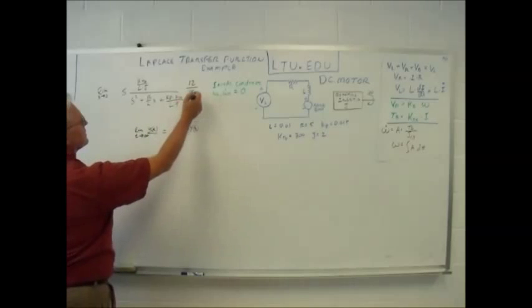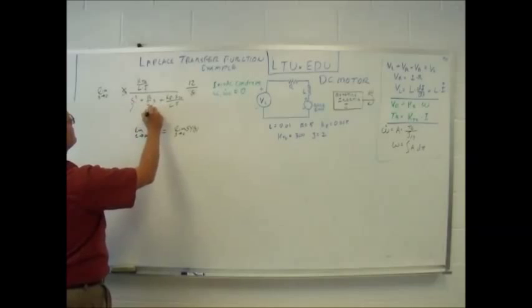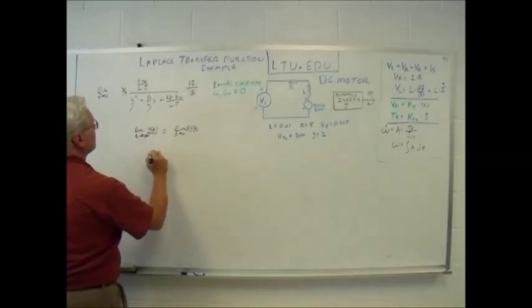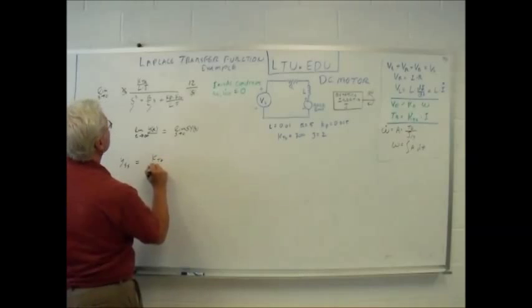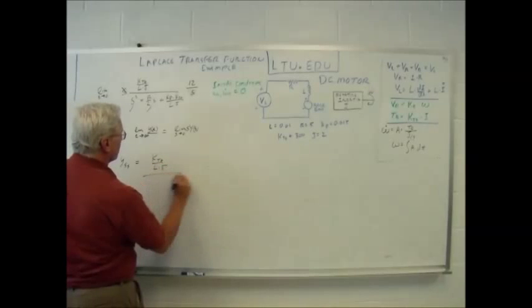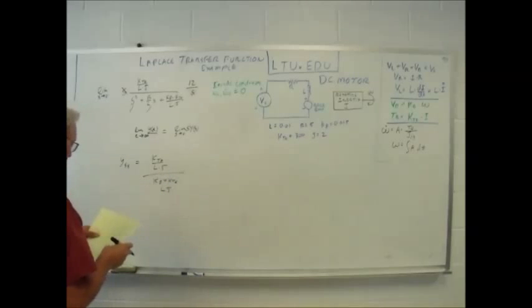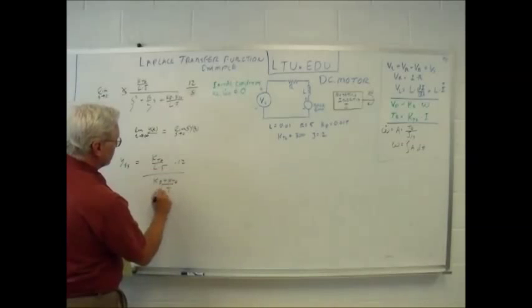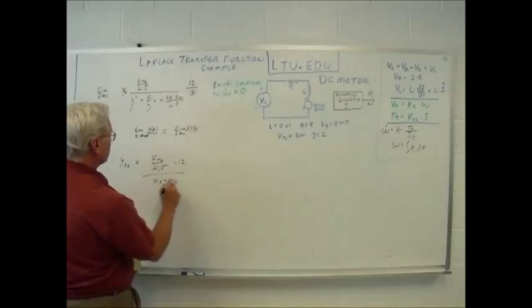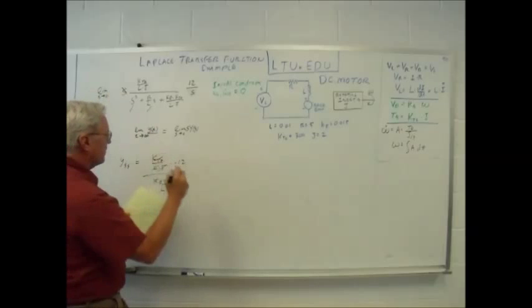So, for the first thing, because I have a step function, this and this cancel out. As s approaches zero, these terms go to zero, and we're left with y steady state equals kt q over l times j over kb plus kt q over l j, times 12. And most of these cancel, so essentially what I'm left with is basically the magnitude of my step over kb.